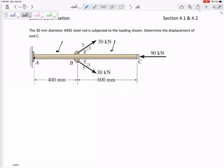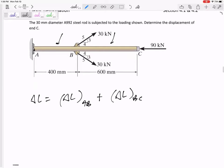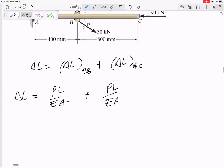So these are broken up into two sections. I'm going to do the delta L is the delta L of section AB plus the delta L of section BC. So the delta L would be the PL over EA of that section, the PL over EA of that section.